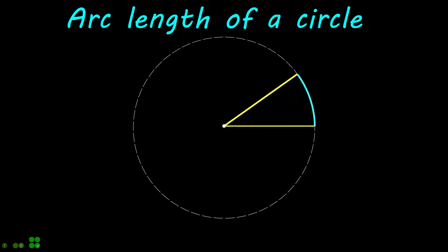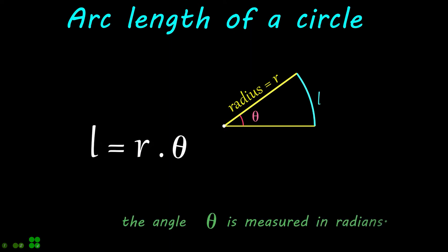Remember, arc length of a circle is related to the radius and the internal angle by this relation. Note, in this equation, the central angle is measured in radians.